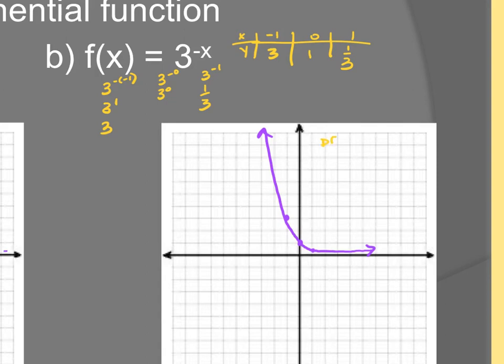So now again, domain: negative infinity to positive infinity. Range: zero to positive infinity, still no vertical shift. Questions on that? Okay.